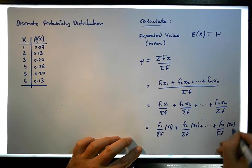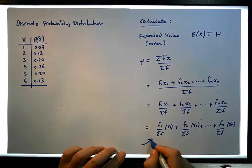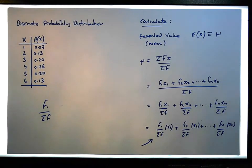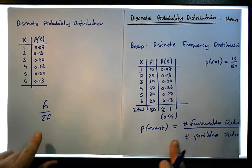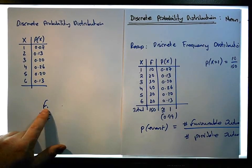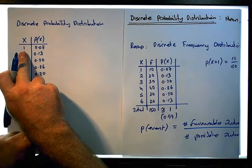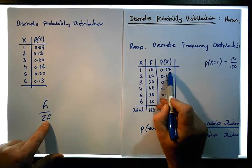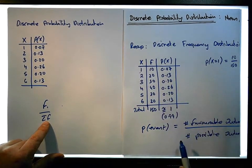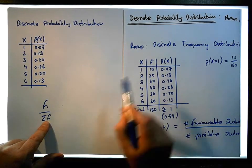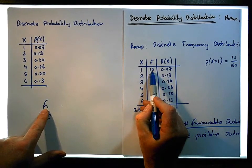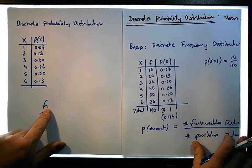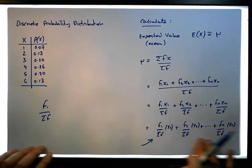Now if we look at these individual fractions — say f₁ over the sum of the f's — what are they? Well, f₁ is how many times the first discrete outcome occurred over the total number of possible occurrences, which is exactly what a probability is: the number of favorable outcomes divided by the number of possible outcomes. So this fraction for the first outcome is actually the probability of the first outcome.